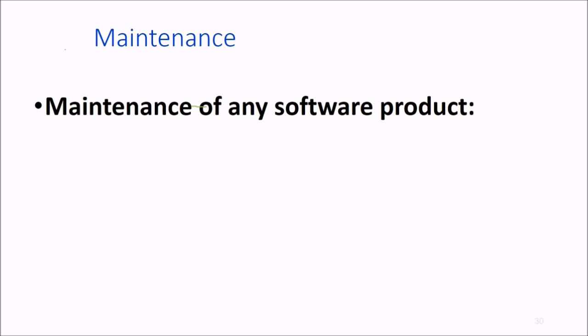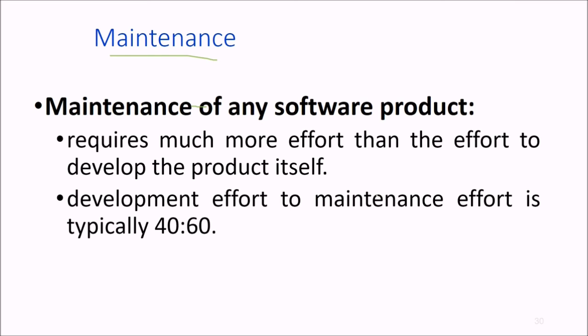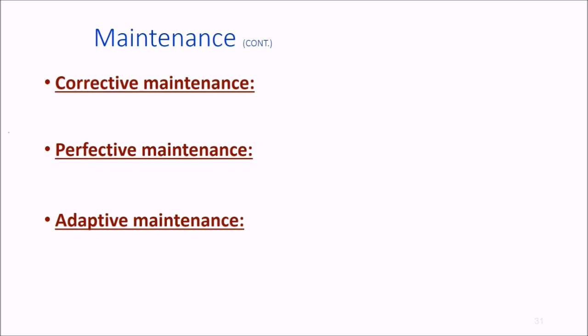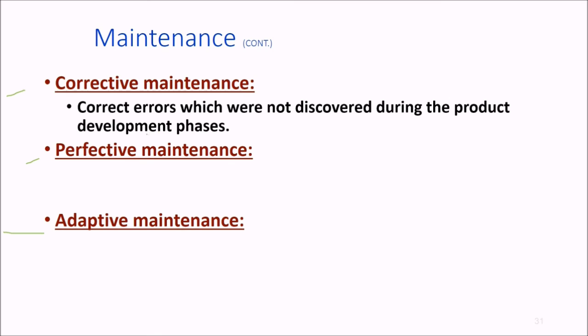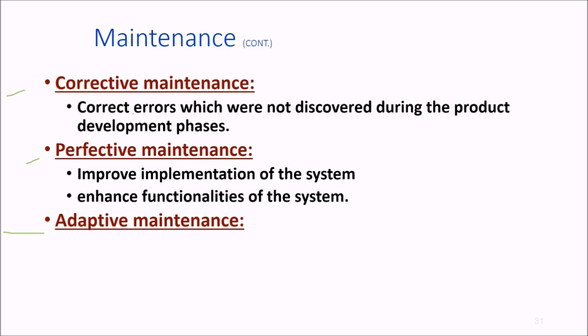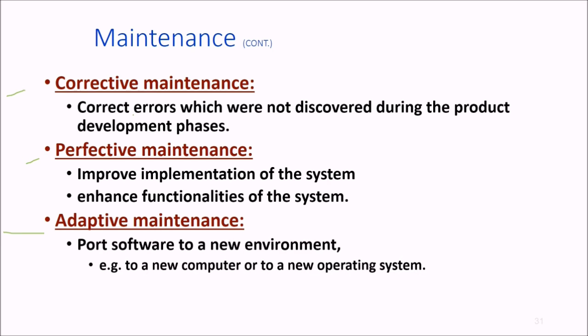Then comes the part which is taking the maximum effort, which is maintenance. Maintenance of any software product requires much more effort than the effort to develop the product itself. Development effort to maintenance effort is typically in the ratio of 40 to 60. We have various types of maintenance: corrective maintenance tends to correct errors not discovered during development phase; perfective maintenance tries to improve the implementation or add enhanced functionalities to the existing system; and adaptive maintenance ports software to a new environment, that is to a new computer or new operating system.